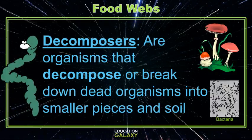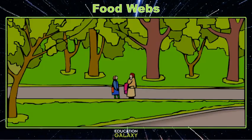Let's take a look at a local park to see producers, consumers, and some decomposers interacting. First, let's look for some producers. I see a lot of grass in this park. Grass is a producer that makes its own energy from the Sun.